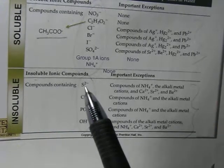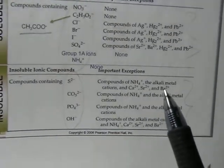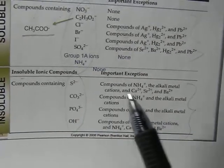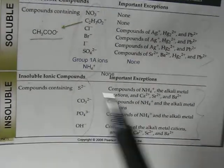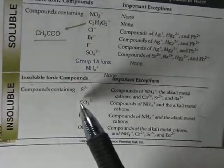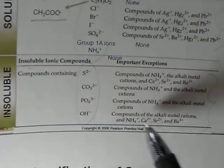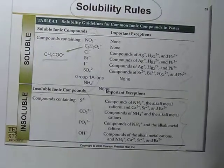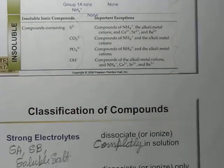For insoluble ionic compounds: sulfides are usually insoluble, except compounds with ammonium or alkali metal ions. Carbonates are usually insoluble, phosphates are insoluble, and hydroxides are insoluble — but those with Group 1A and certain Group 2A ions will be soluble. This is a very important solubility table to keep in memory.